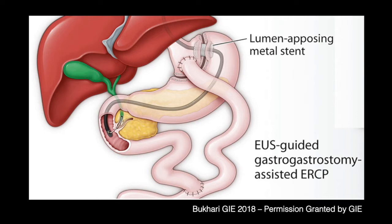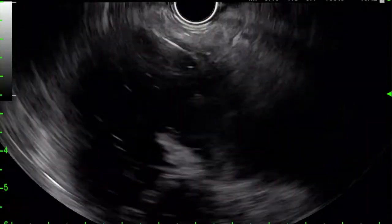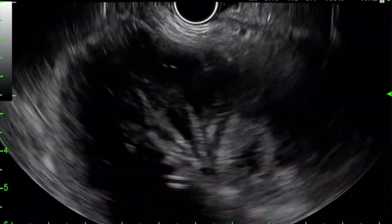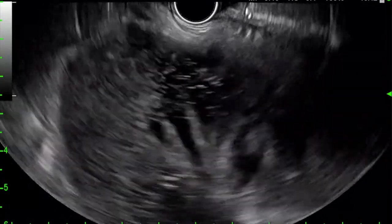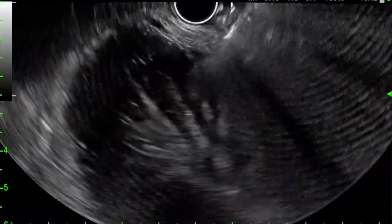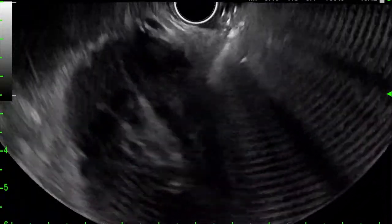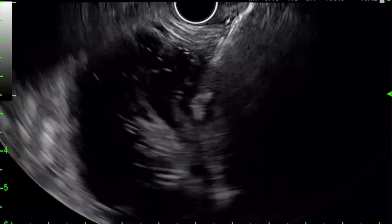The patient elected to undergo EUS-guided jejuno-jejunostomy using a 15-millimeter lumen-apposing metal stent, subsequently followed by trans-jejunal ERCP. To aid in the creation of the EUS-guided jejuno-jejunostomy, we injected a combination of saline and contrast using the indwelling percutaneous biliary drain to allow for distension of the small bowel and create a target for EUS-guided access.